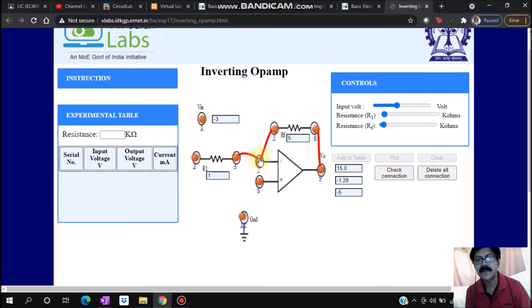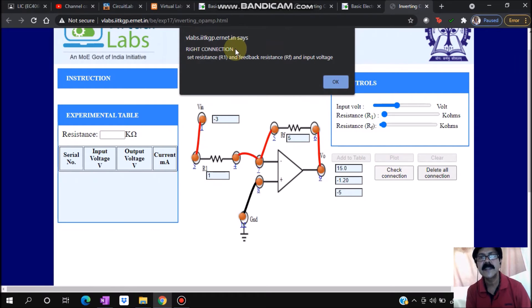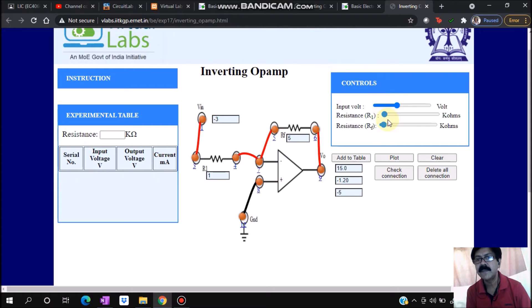I have connected Rf at its terminals. Now R1 I need to connect like this. The non-inverting terminal I'll just ground it, so drag it here. The input is supposed to be connected to R1. We see that the total connection is there. To see whether the connection is okay or not, just click check connection. It is saying right connection. Set resistance R1 and Rf values - we already selected those, or you can vary them. R1 is 1 kilohm, Rf is 5 kilohms.